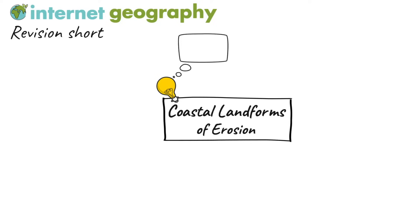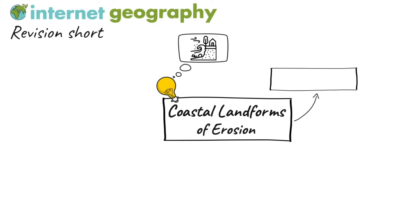The landforms created largely depend on the material that forms the cliff. More resistant material such as chalk leads to the formation of classic coastal landforms such as arches, stacks and stumps. Where there is a combination of hard and soft material, bays and headlands can form.